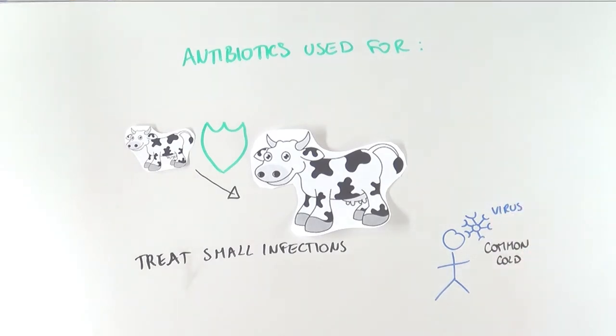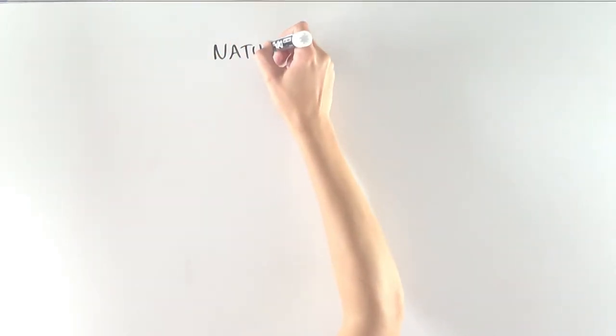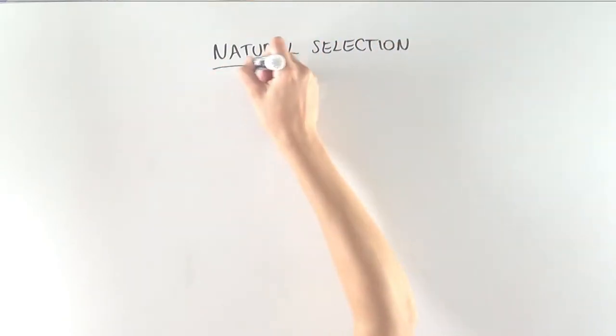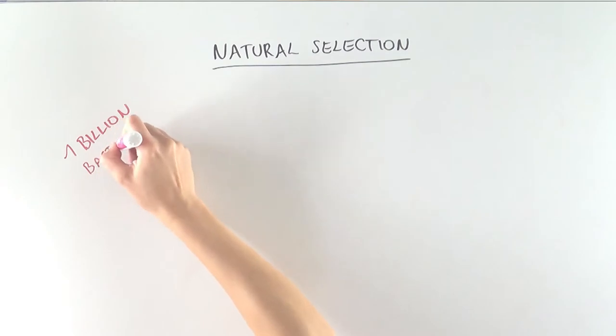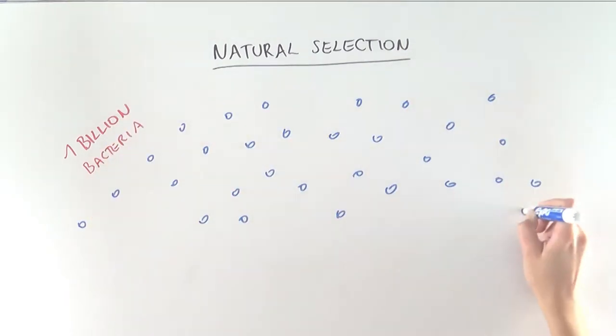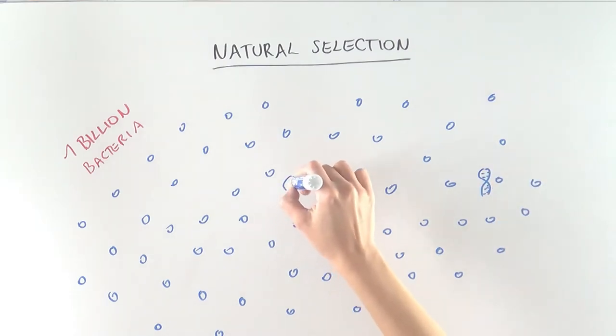Because of this broad use of antibiotics, we are now seeing natural selection take place right before our eyes. To understand natural selection, let's take 1 billion bacteria. Each of these 1 billion bacteria are slightly different from each other, with a slightly different DNA sequence.